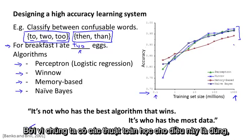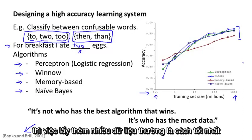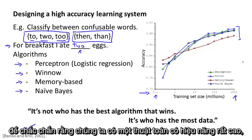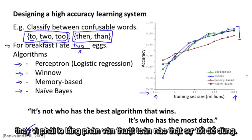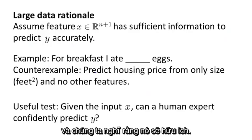So when is this true? And when is this not true? Because if we have a learning algorithm for which this is true, then getting a lot of data is often maybe the best way to ensure that we have an algorithm with very high performance rather than debating or worrying about exactly which of these algorithms to use. Let's try to lay out a set of assumptions under which having a massive training set we think will be able to help.